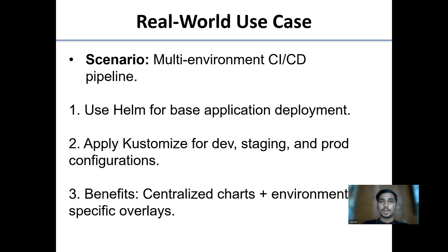Real-world use case for both Helm and Kustomize — the scenario is a multi-environment CI/CD pipeline. Use Helm for base application deployment and Kustomize for applying environment-specific configurations for dev, staging, and prod. The benefits are centralized charts combined with environment-specific overlays.